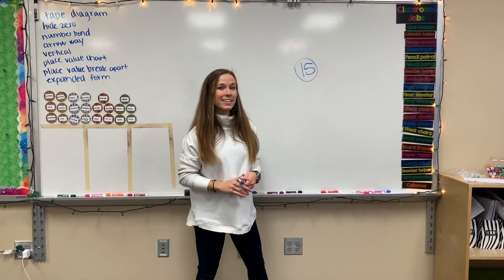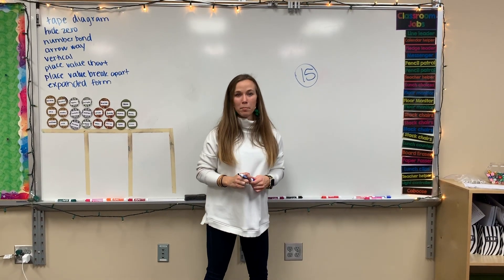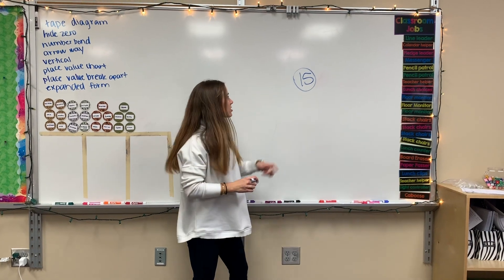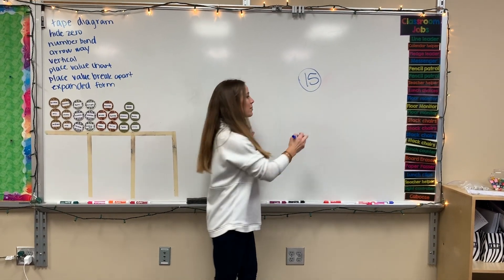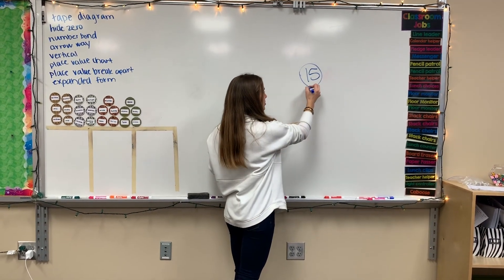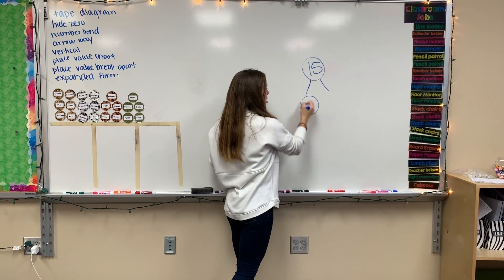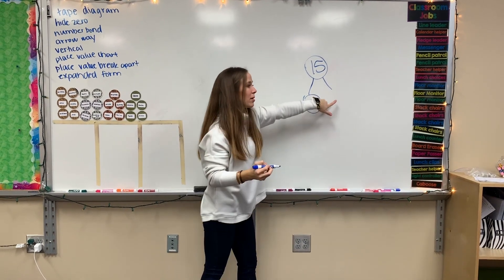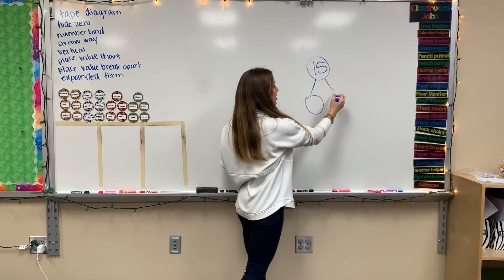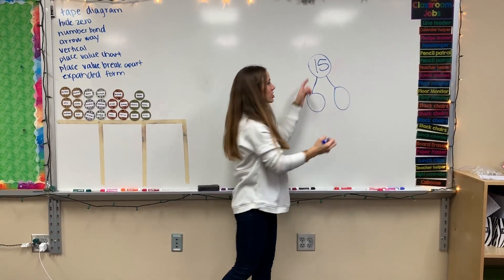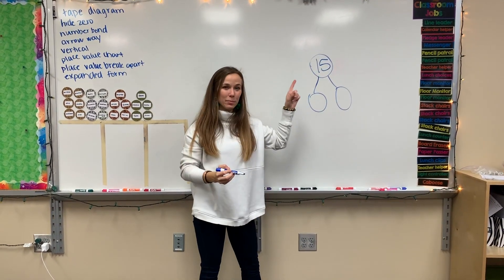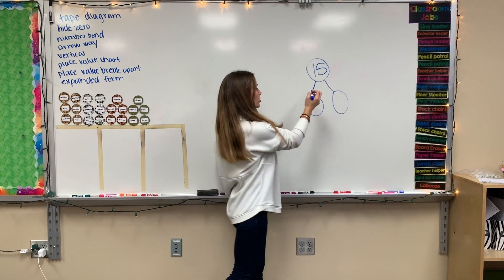The next method is the number bond way. That's where you start with the biggest number on the top, and then you need to break it down into two numbers, where these two numbers that you end with should add up to the bigger number.